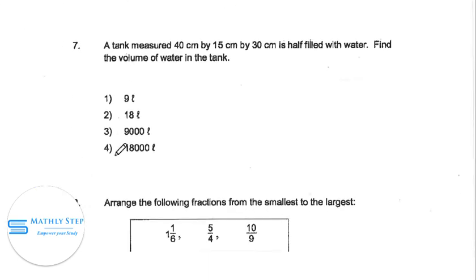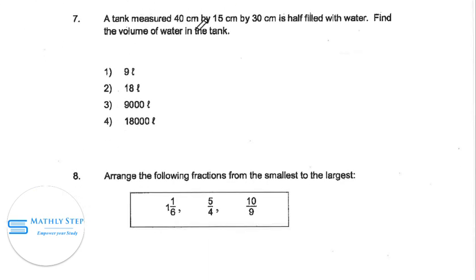Question 7. A tank measured 40 cm by 15 cm by 30 cm is half filled with water. Find the volume of water in the tank. So we find the volume of total for the tank: 40 cm times 15 cm times 30 cm.